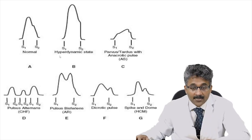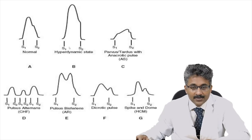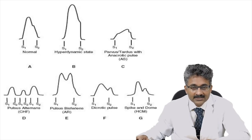In hyperdynamic states, the amplitude of the pulse is increased. The hyperdynamic pulse is seen in anemia, thyrotoxicosis, aortic regurgitation, AV fistulas, severe bradycardia, and high output states.